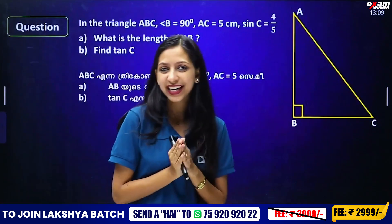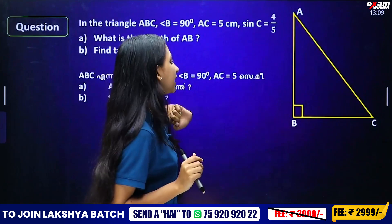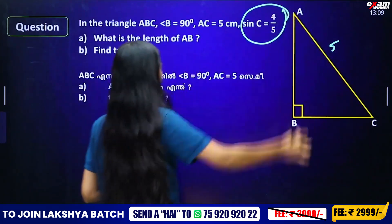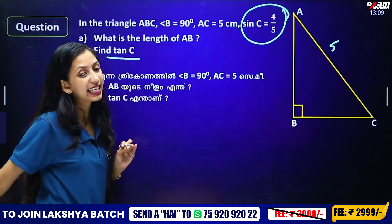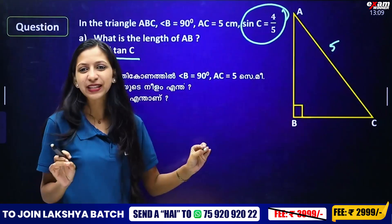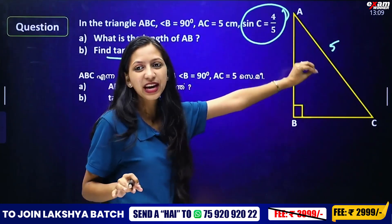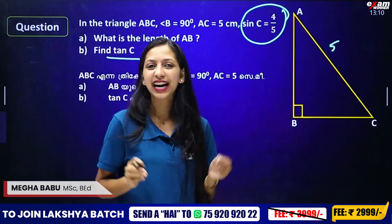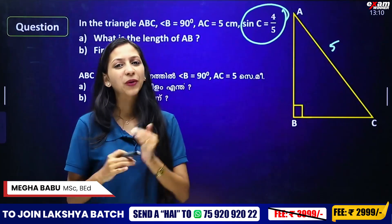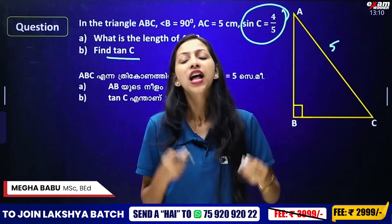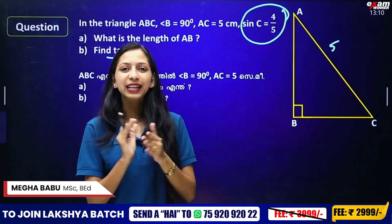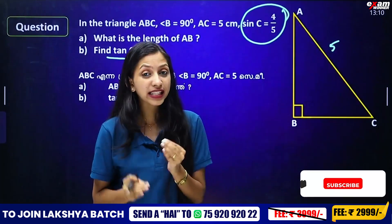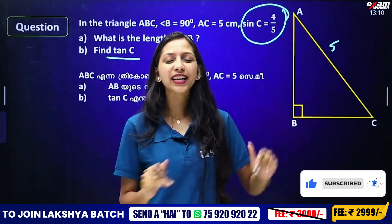The next question: In triangle ABC with angle B = 90°, AC = 5 cm and sin(C) = 4/5. Find the length AB using tan(C). This is a question we've touched on before — opposite divided by hypotenuse. If you have questions about this chapter, please comment below. We'll see you next time. Bye.